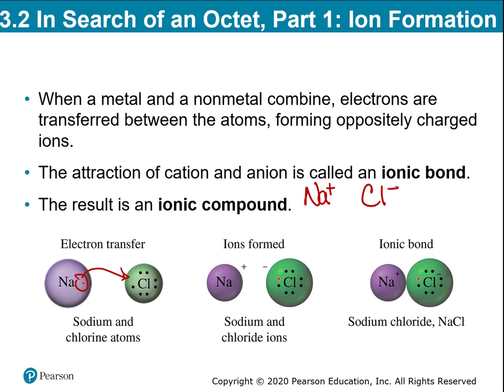Opposites attract — and that's what an ionic bond is. The attraction of the positive ions to the negative ions creates an ionic bond. NaCl is referred to as an ionic compound. In ionic bonds it is always a metal and a nonmetal. Metals have very few valence electrons — one, two, maybe three — while nonmetals have five, six, or seven electrons and almost a full shell. This big discrepancy allows for an easy transfer of electrons, always from the metal to the nonmetal.